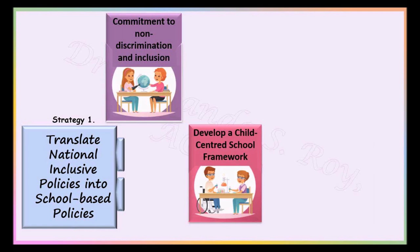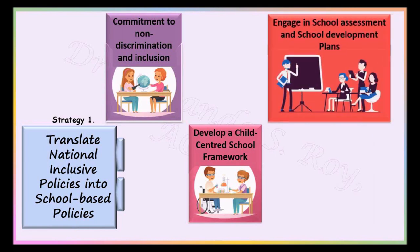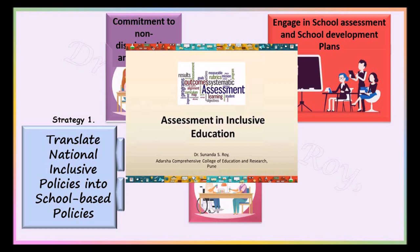Focus on the development of a child-centered school framework. A school having an inclusive culture is very flexible. It modifies the teaching, learning and evaluation framework to cater to the needs of the differently abled students. Engage in school self-assessments and school development plans. The school should also constantly assess the different practices followed by it and make modifications as and when necessary.